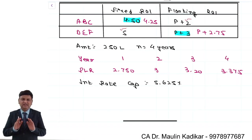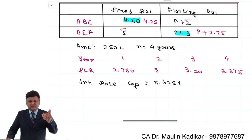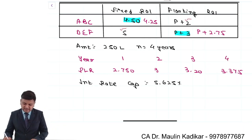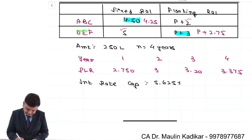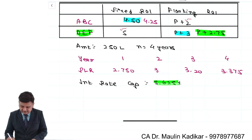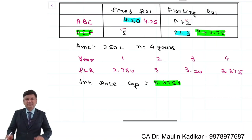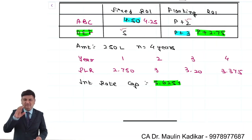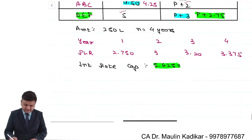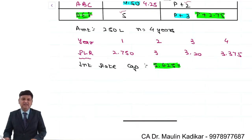This is the first concept — swap. No swap charges are provided so we will ignore them in the calculation. The second concept is the cap option. DEF Limited, which has borrowed at floating rate, fears that the floating rate of interest will go up, so it is entering into an interest rate cap transaction. Logically, PLR plus 2.75 together will be compared with 5.625% for the purpose of calculating the differential interest, because the PLR information given is substantially less than 5.625%.